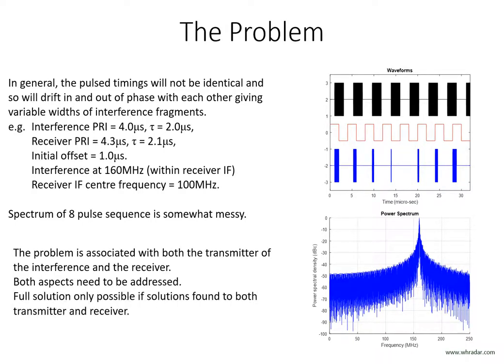This case also illustrates how the rising and falling edges of the interference pulses are defined by both the pulsing of the transmitting radar and the gating signal providing protection of the victim receiver. A full solution to the interference problem must therefore address both the transmitter and receiver. A solution to just one — either the transmitter or receiver — will have minimal benefit. We will start by considering the transmitter solution.